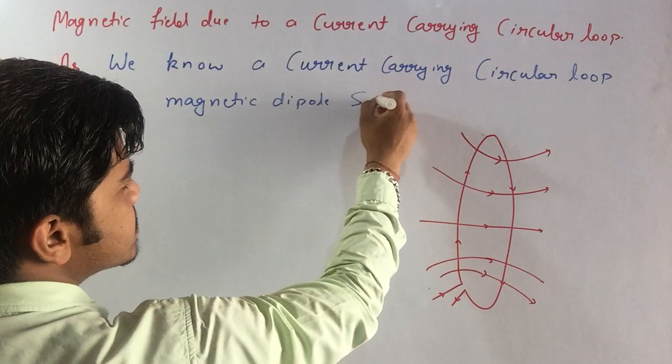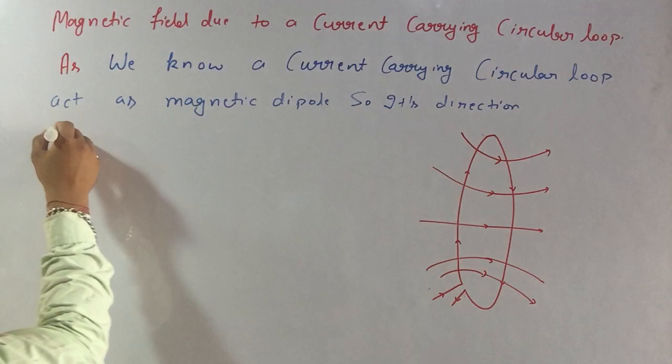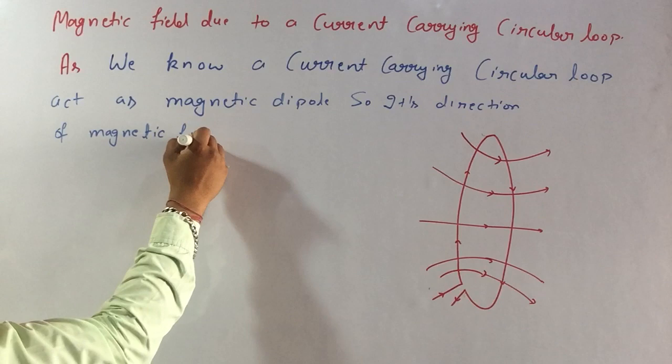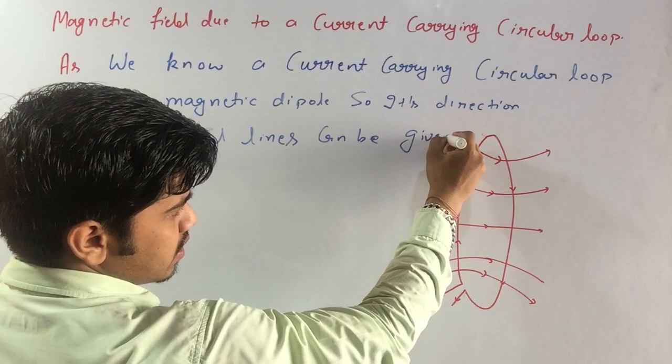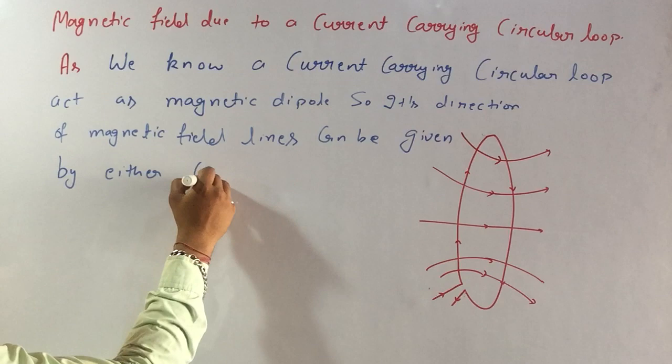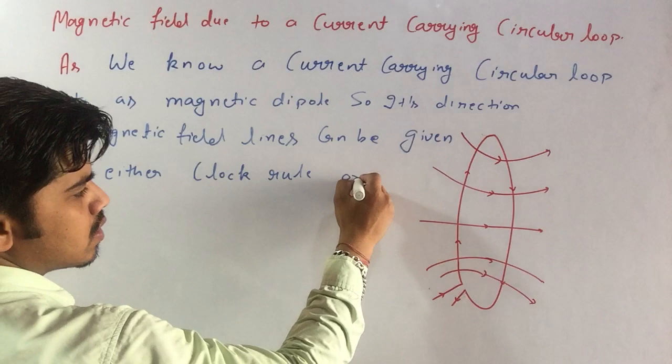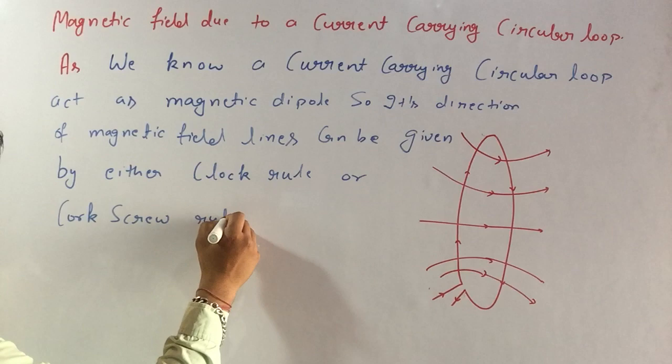The direction of magnetic field lines can be given by either the clock rule or the corkscrew rule.